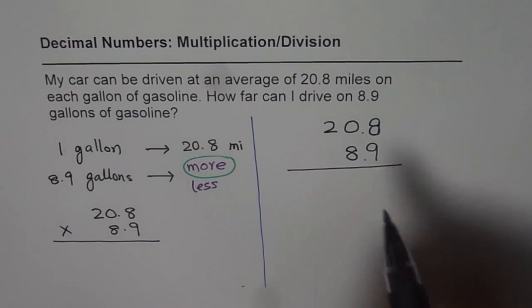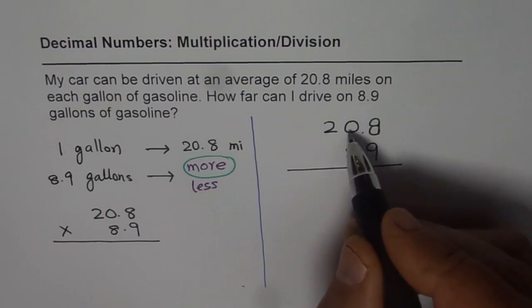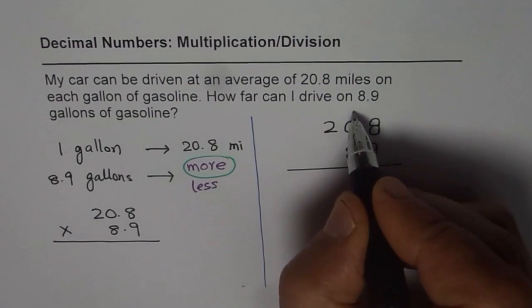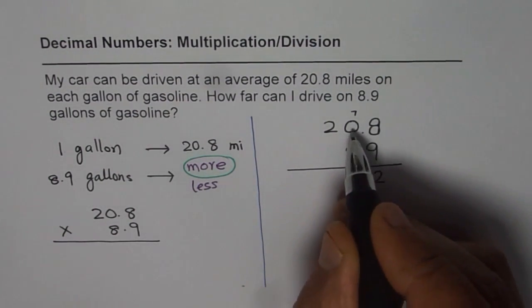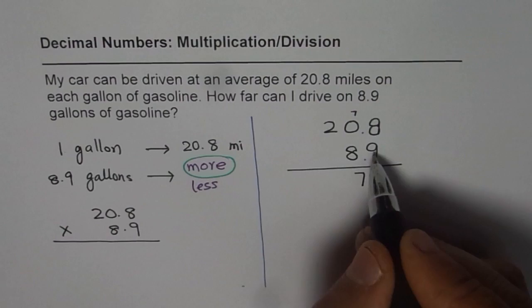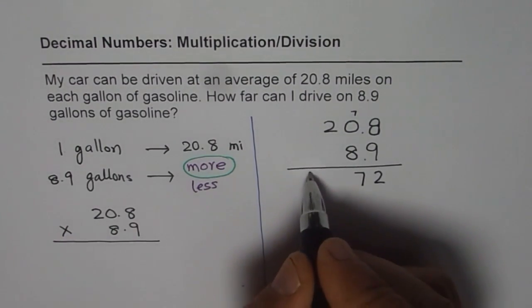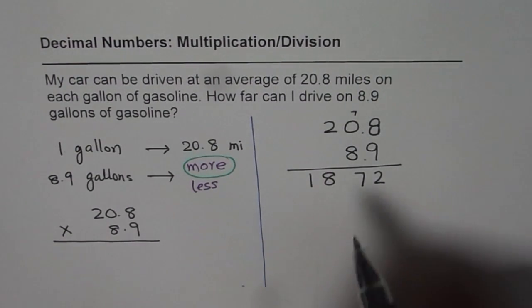And you know how to multiply with two-digit numbers. Now 9 is in 1's place. So let us multiply. 9 times 8 is 72. So 7 goes there and we get 2 here. 9 times 0 is 0 plus 7 will give us 7. 9 times 2 is 18, so we will write 18. Position them properly.